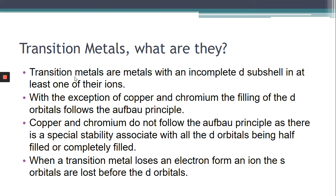When a transition metal loses an electron to form an ion, the s orbitals are lost before the d orbitals. Our 4s orbitals are filled before 3d because the energy you need to put electrons in is very, very close. For 4s we've only got to put two electrons in, whereas 3d we want to be up to 10. So in terms of energy, it's easier to put them into 4s.